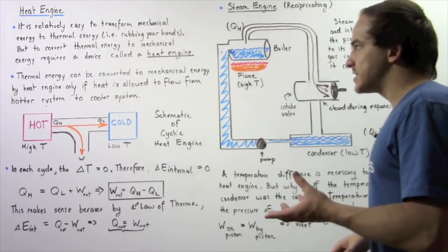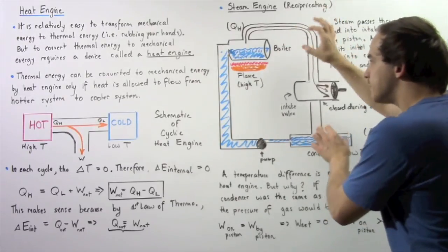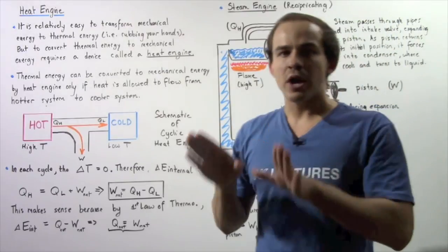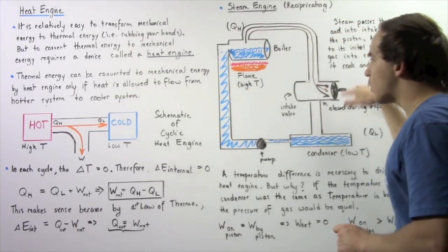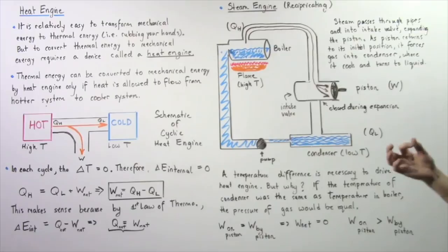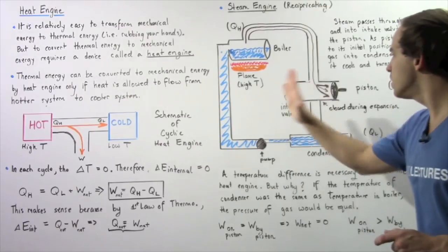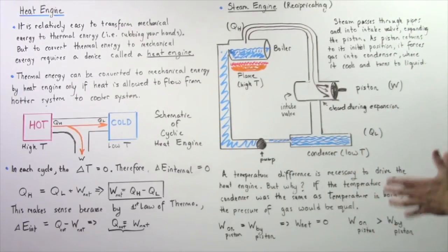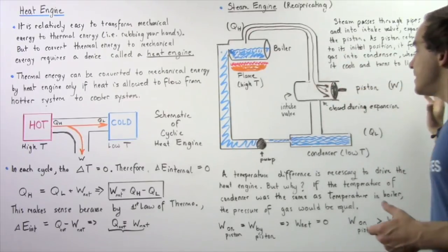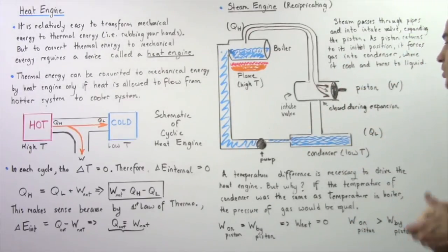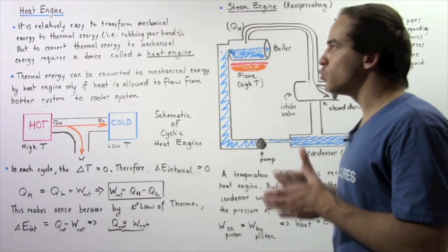In a real steam engine there is a temperature difference, which creates a pressure difference — the pressure is lower at the condenser than at the boiler. Because of this, the work done on the piston by the steam is greater than the work done by the piston to compress the cooler gas. This results in a net work output, and so the steam engine does work.